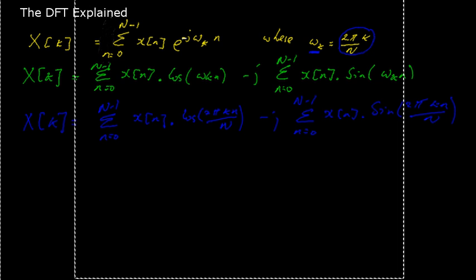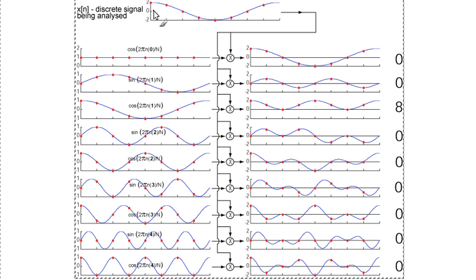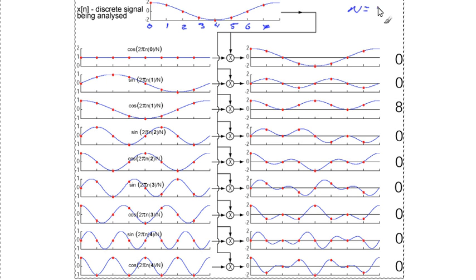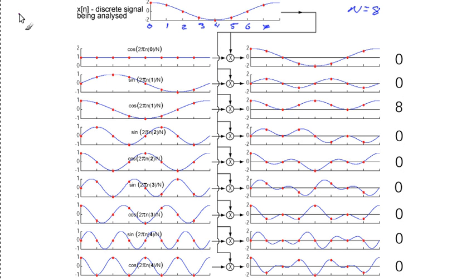The signal I'm analysing in this case is a well-defined signal — a cosine waveform of amplitude 2, with one cycle over 8 samples. I've got sample numbers 0 through 7, so N equals 8. Now, remember what the DFT is trying to do: it's trying to determine the presence of sinusoids in a signal. In this case I've only got one sinusoid present. So if we were to think about the magnitude spectrum of this signal, what I'd expect is a single spike to indicate the presence of a single sinusoid.